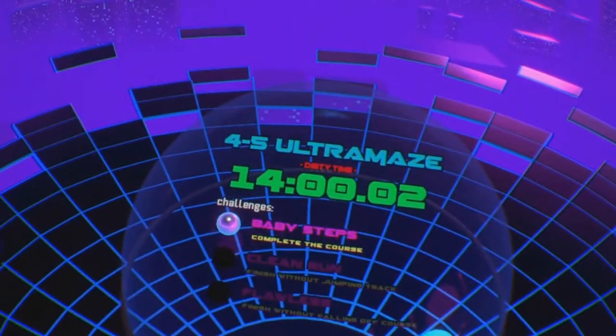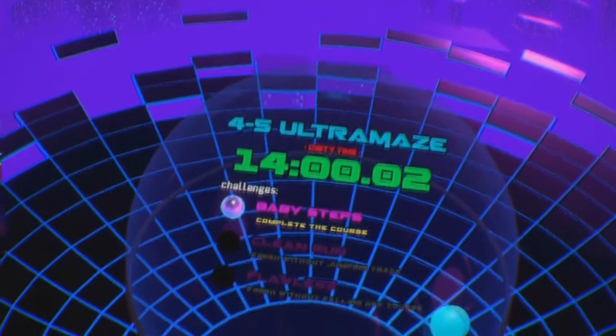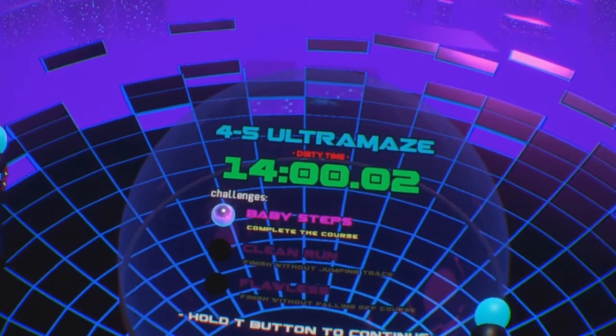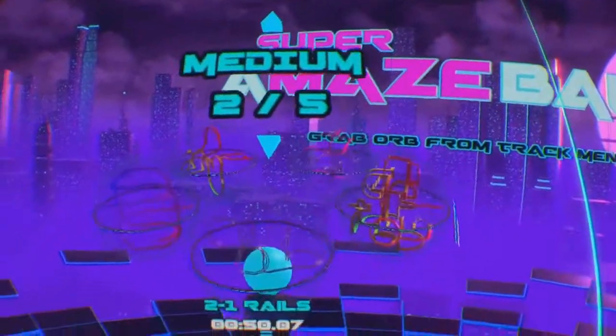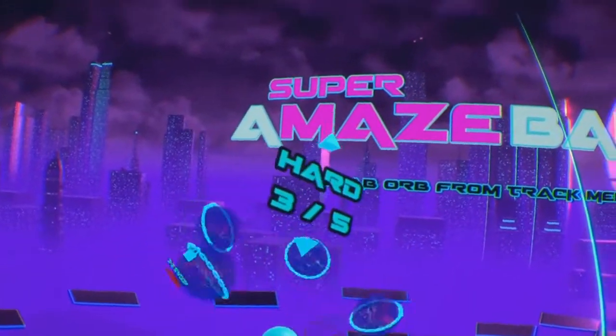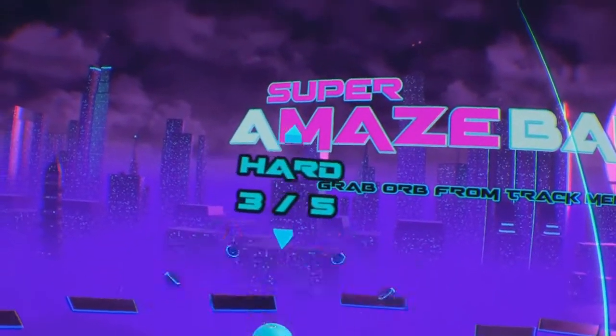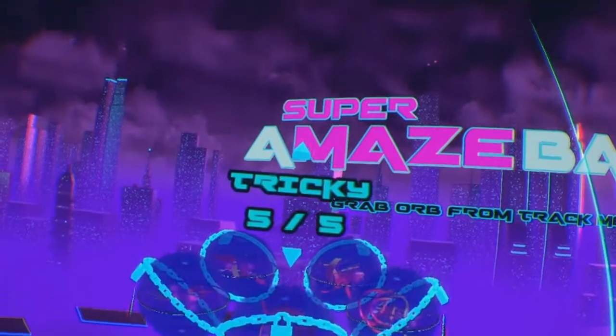Each stage has three challenges for you to beat. There's one for reaching the end of the track, one for not jumping off track, and one for not falling off the track. Unfortunately, these challenges are not displayed in the track selection screen, and only appear again after you have reached the track's finish line, which obviously makes keeping track of the challenges progress a hassle.